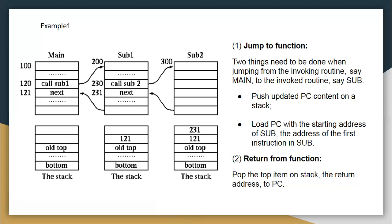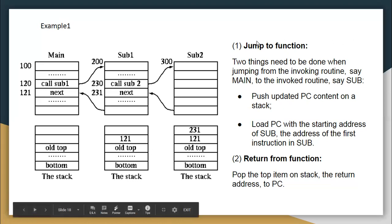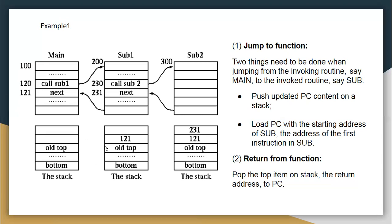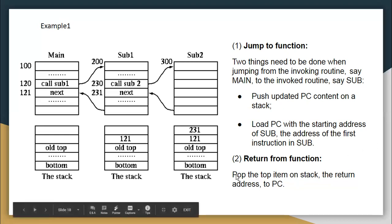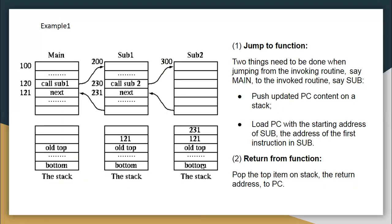Two things need to be done when jumping from the invoking routine (main) to the invoked routine (subroutine): first, push the updated program counter onto the stack; second, load the program counter with the starting address of the subroutine — that is, the address of its first instruction. When returning from the subroutine, pop the top item from the stack (the return address) back into the program counter.